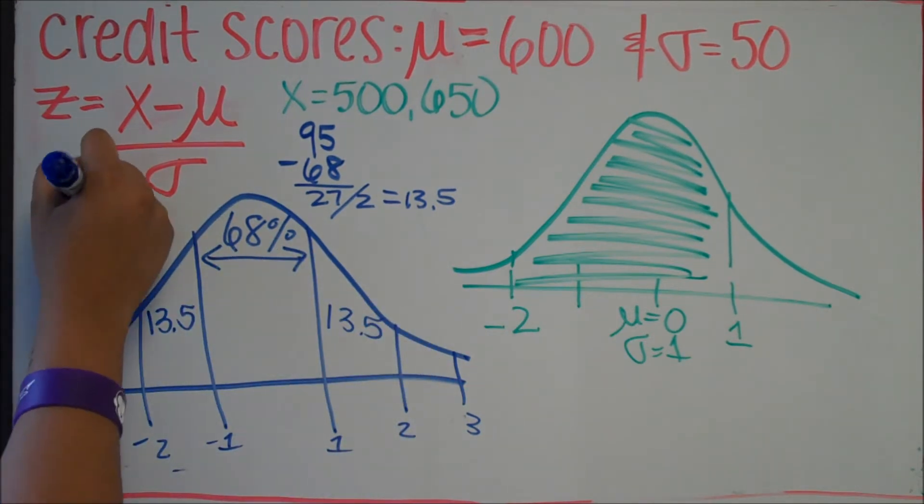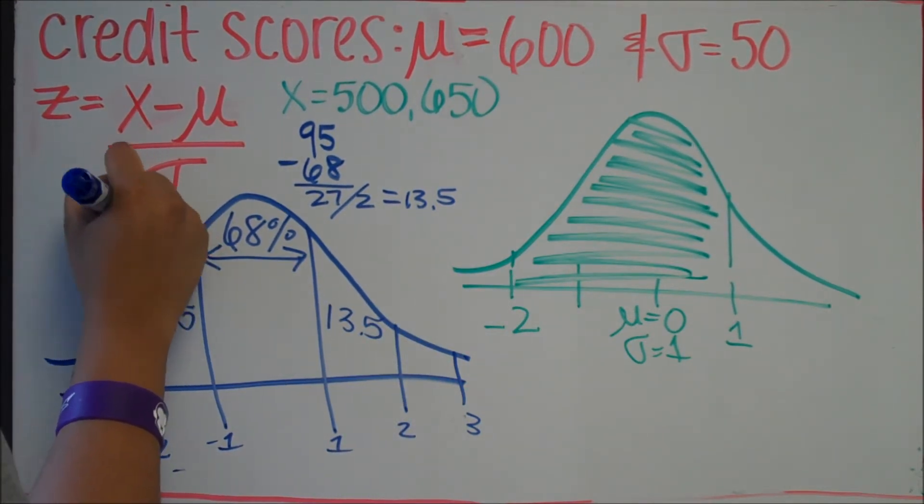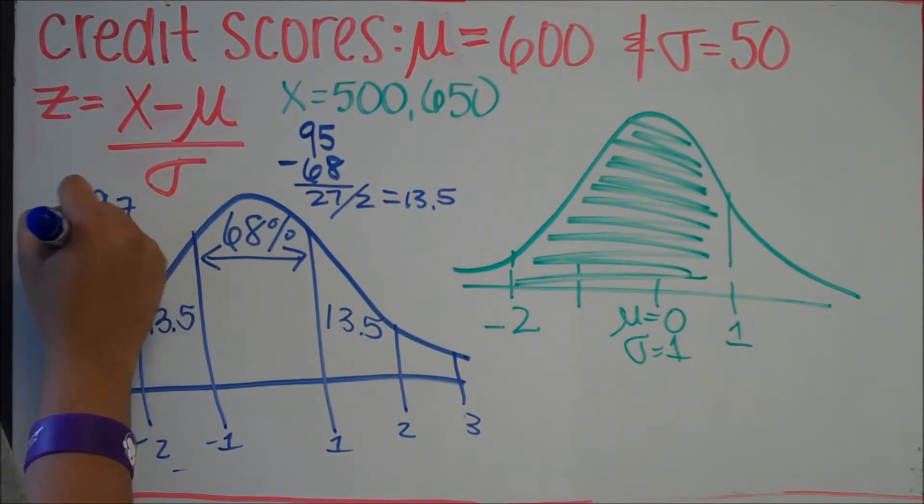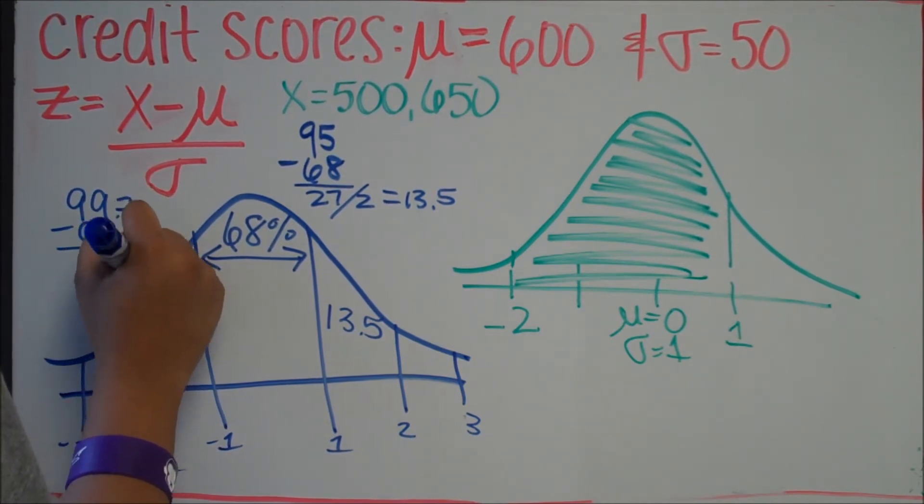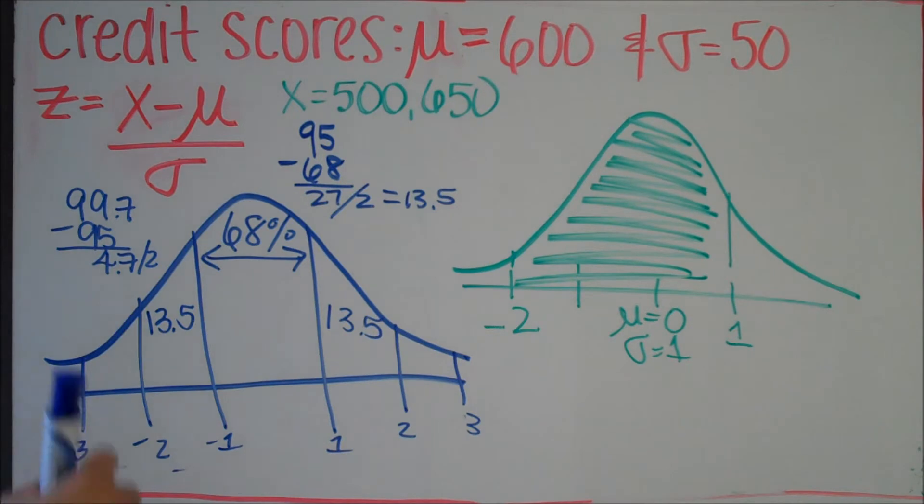Then you're going to take 99.7, subtract 95, and you should get 4.7. You're also going to divide that by 2 to put that in each tail, and you should get 2.35. So you're going to write that in.